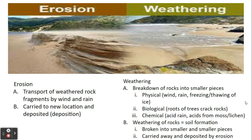There are other ways that rock can weather, and it can weather in three different ways. One being physical — so wind, rain, the freezing or thawing of ice can actually crack it and make fractures. We can see biological weathering, which is usually the roots of trees cracking the rocks, or chemical changes in the rocks that help break them down — so that could be acid rain or the acids produced from mosses and lichens. That weathering of rock then creates our soil over time. That soil can then be carried away and deposited by erosion, which is the transport of that weathered rock by wind or rain to a new location.